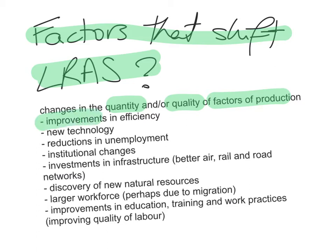Any improvements in efficiency can shift the Long Run Aggregate Supply Curve to the right. New technology can also shift the country's productive potential outwards. Reductions in unemployment — if the labour force is increasing and more and more people are working, aggregate supply will increase over time. Institutional changes that allow the economy to be more productive, like deregulating the power of trade unions because they are charging artificially high wages, can also increase Long Run Aggregate Supply.